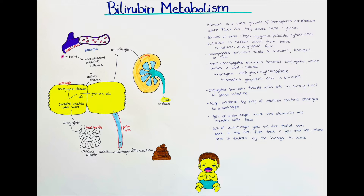Bilirubin is actually a waste product of hemoglobin catabolism. It comes from hemoglobin — when red blood cells die, they release hemoglobin, and this molecule then splits into its two components: heme and globin.